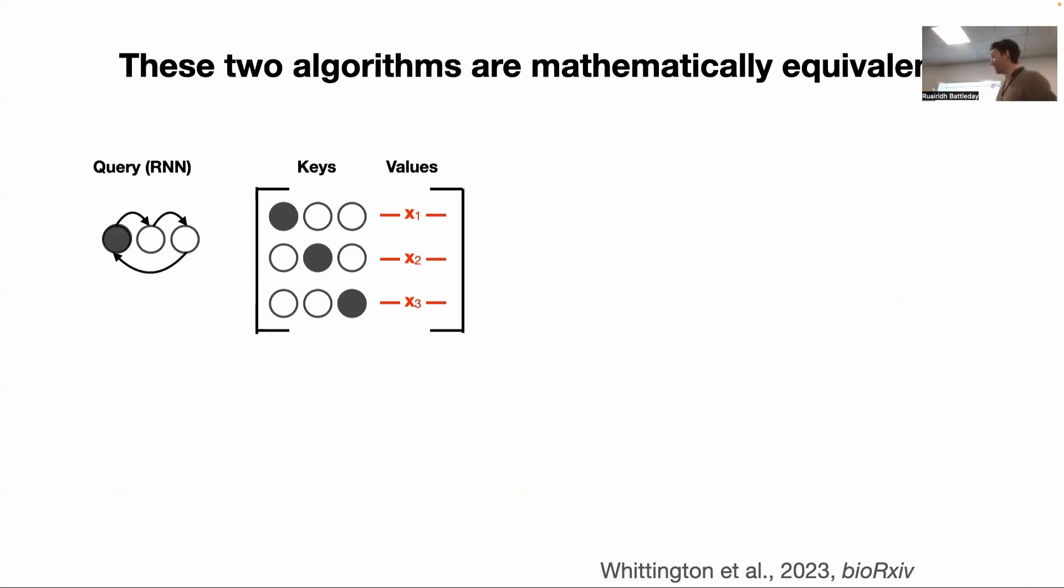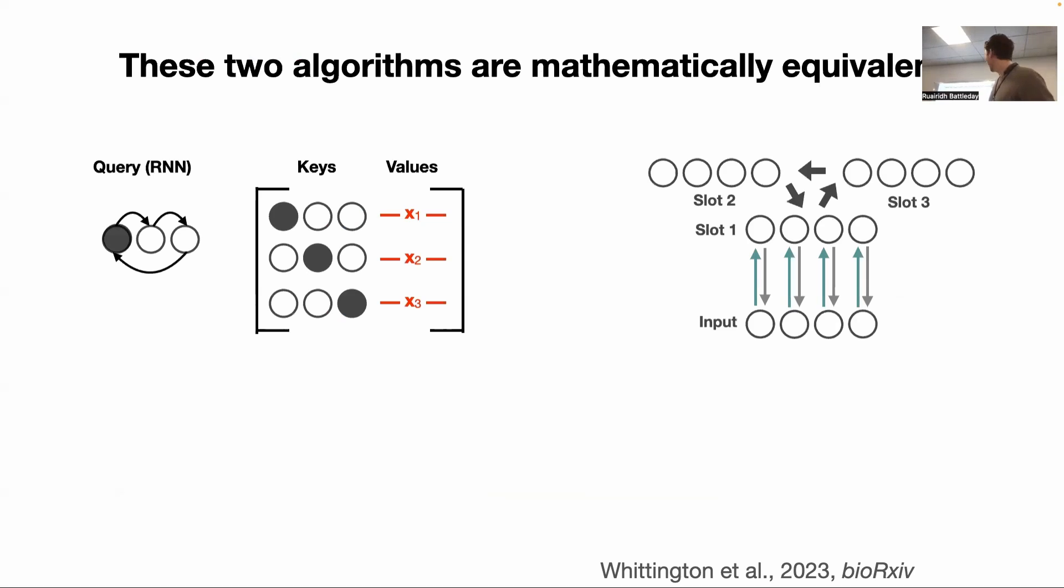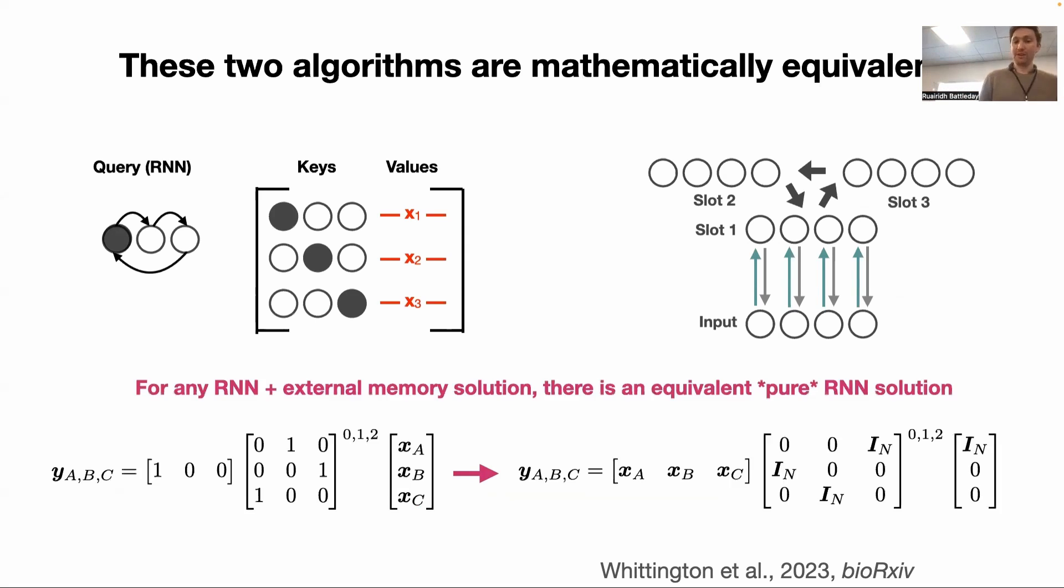One point is that these two things, as you might imagine, this external memory versus this internal memory system, they are doing exactly the same computation. So there's two different algorithms, two different discovered algorithms. And in fact, mathematically, you can show that they're completely identical. They do exactly the same thing. There's a transformation between one and the other. Totally identical.